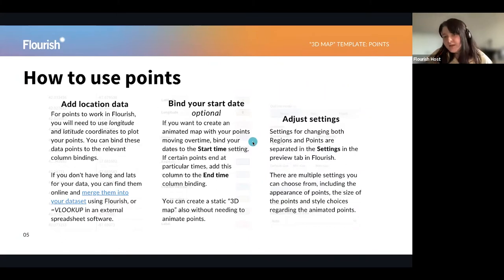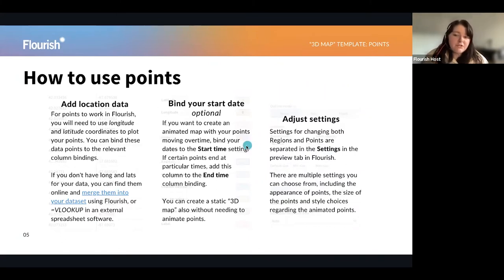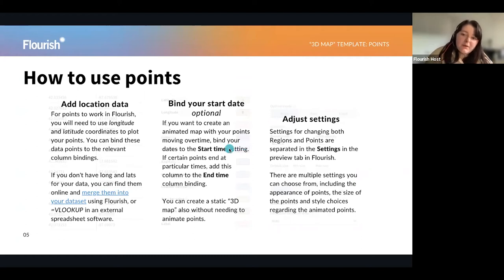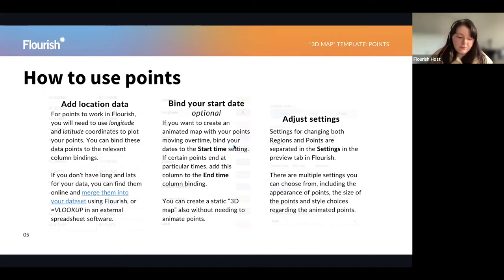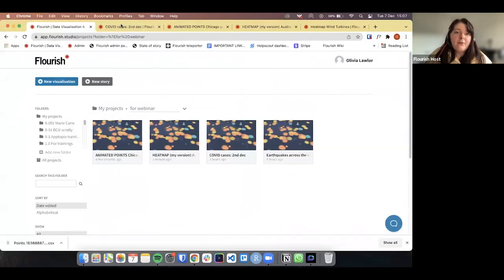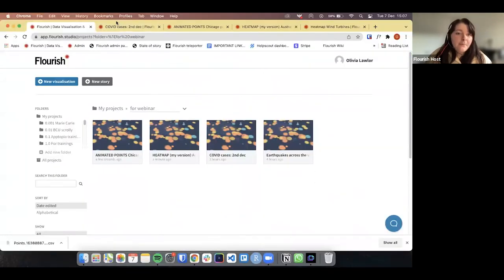And then finally, you would just want to adjust the settings. The settings for both the regions and the points are separated within the settings panel. There are multiple ones you can choose from, including the appearance of points, the size of the points, and style choices regarding the animated points. So I'm just going to go ahead into our app.